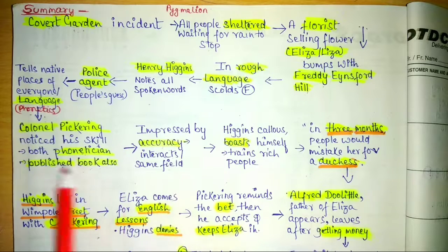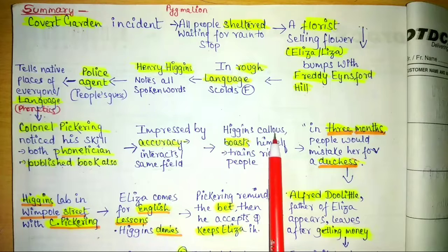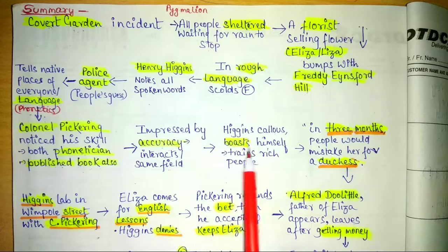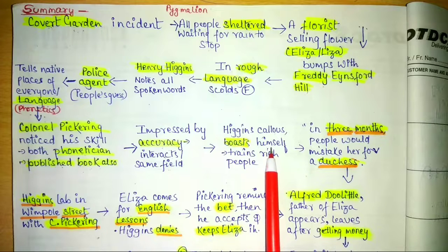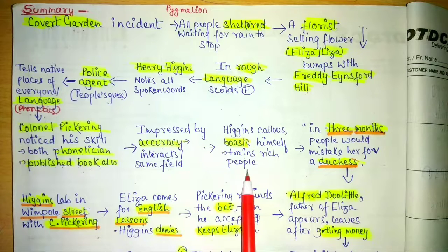Pickering became impressed by the accuracy of Henry Higgins in analyzing a native place with the help of phonetics. Both of them belonged to the same field. Higgins was a very callous person — he boasts himself and is very proud of his caliber. He says that his job is to train rich people.